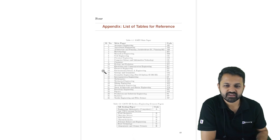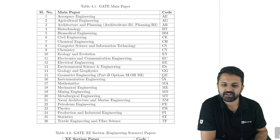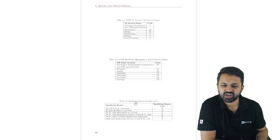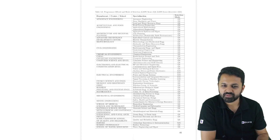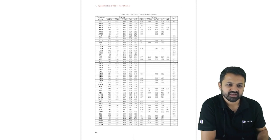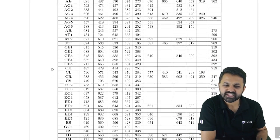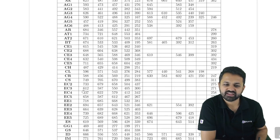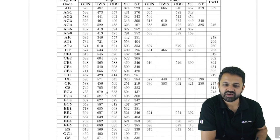These are the different program codes where you can take admission, with the main branches being EC and EE. The cutoff GATE scores for EC students in the general category are: EC2 (Micro Electronics) — 733, EC3 (RF and Microwave) — 612, EC4 (Communication Engineering) — 637, and EC5 (Vision and Intelligent System) — 658. For EE, the cutoffs are 718, 694, 664, 739, and 725 across the five specializations.